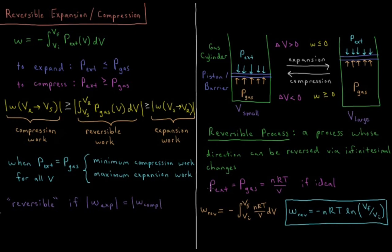So what is this for an ideal gas? The external pressure equals the pressure of the gas, which, if it is ideal, is NRT over V. PV equals NRT, so P equals NRT over V, number of moles times gas constant times temperature over volume.